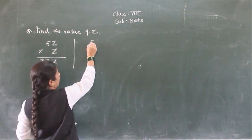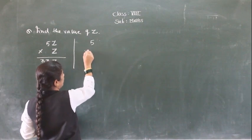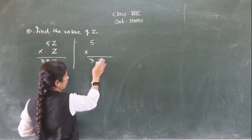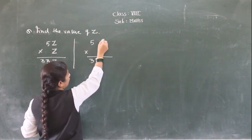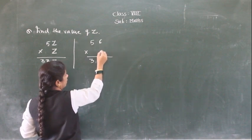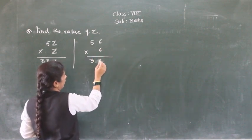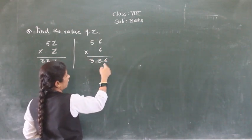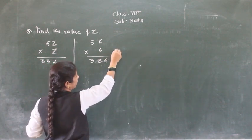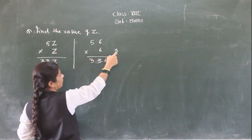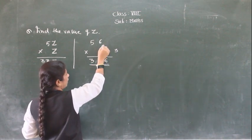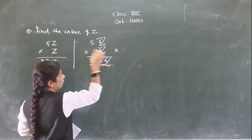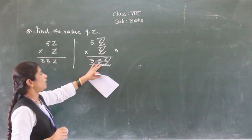Here in 5Z, we need to find the second digit Z. So you will get 33Z as the result. If we take Z equals 6 and multiply: 56 times 6. Then 6 times 6 are 36 — write 6, carry 3. And 6 times 5 are 30 plus 3 carried = 33. So you get 336. We are finding this Z, this Z, and this Z — all are 6. So the value of Z is 6.